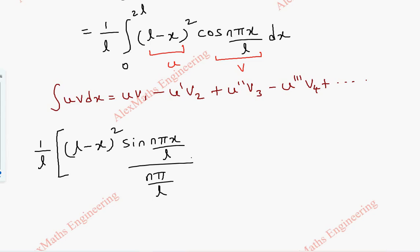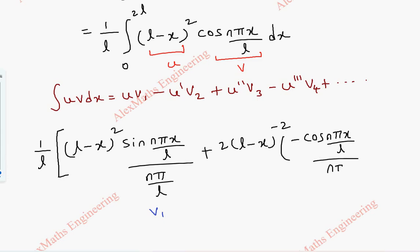We divide by the coefficient of x. Then minus u'. u' is the derivative of (L − x)², which is 2(L − x)(−1), so minus 2(L − x). And v₂, which is the integration of v₁, is −cos(nπx/L) / (nπ/L)². Because already there is nπ/L and again one more nπ/L will come, so we put whole square.